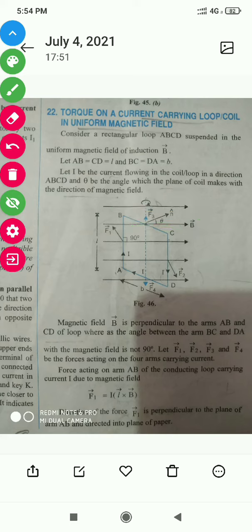On this loop there are four sides: AB, BC, CD, and DA. On each side a different force is acting. AB and CD represent the length, while BC and DA represent the width of this coil.